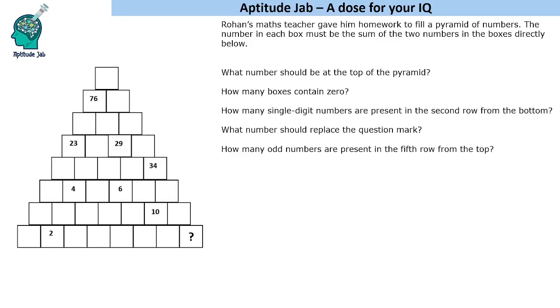Hello everyone, welcome to Aptitude Jab. This is an easy number puzzle where we are given a pyramid of numbers. It is given that the number in each box must be the sum of the two numbers in the boxes directly below. We are given some numbers in this pyramid. We will have to fill all these numbers and then answer these questions.